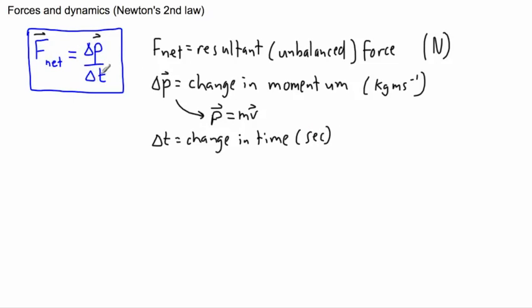So that's F net equals delta p over delta t, that's Newton's second law. What this tells you is that if you have a resultant force, that means you're going to have a change in momentum, which means a force can cause a change in speed or velocity. Earlier when I had said that forces were all about applying a change in velocity, this is why.